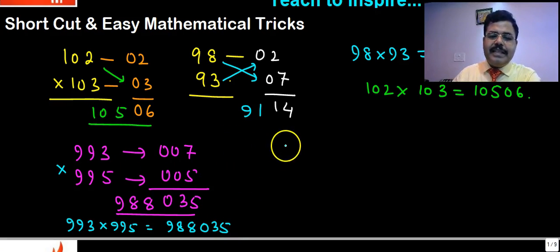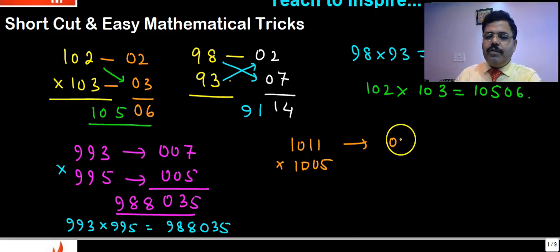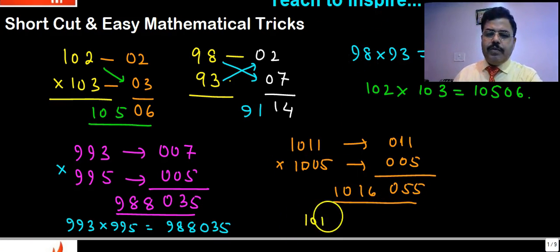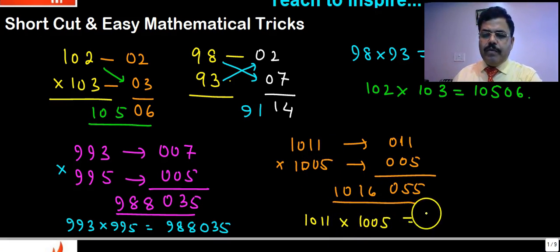Suppose the number is bigger than 1000: 1011 and multiply by 1005. So what to do? This is 011 more and this is 005 more, so we can multiply this - what will come? 055. Now add this to... 1016 will come. So that will be answered - that is product of 1011 multiply by 1005 will be equal to 1016055. And that is interesting.